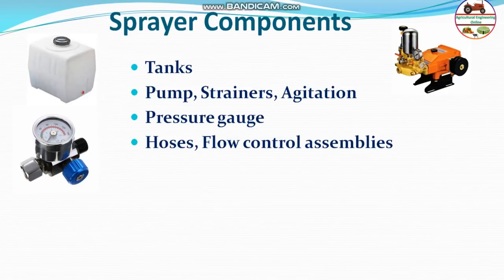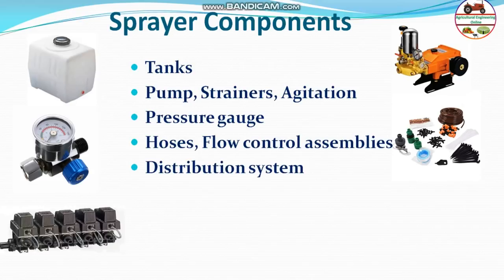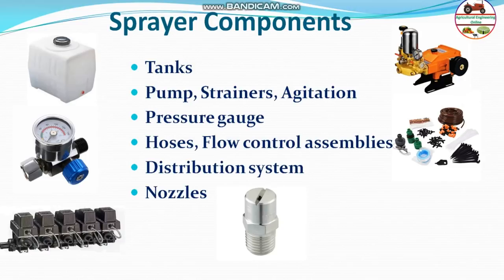There is also a distribution system that controls how much liquid is delivered to which side and which sections are open or closed in complex systems. The most important part of the sprayer is the nozzle, which atomizes the spray into droplets. Inside the nozzle there is a small orifice and a swirl plate, which together create different patterns of droplets.